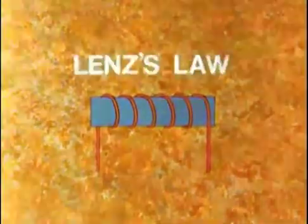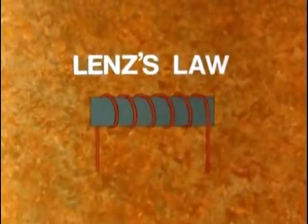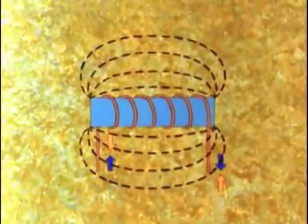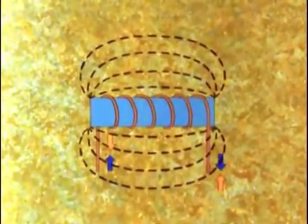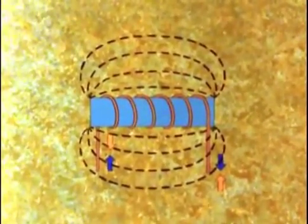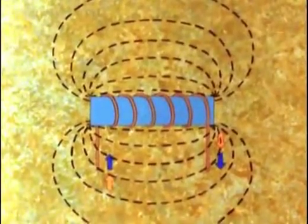This is an example of Lenz's law. In general, Lenz's law says that as current increases in a coil, an EMF is induced, which opposes the increase. And when the current decreases, the induced EMF tries to keep it going.